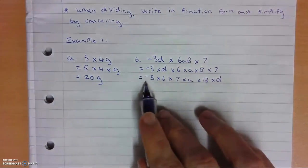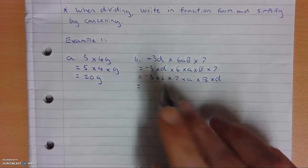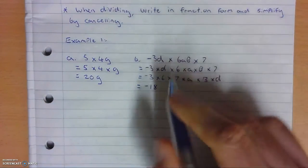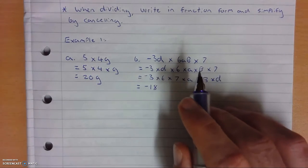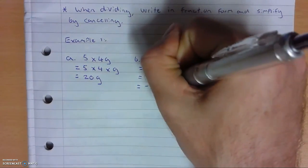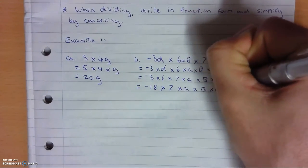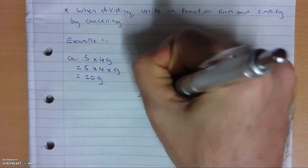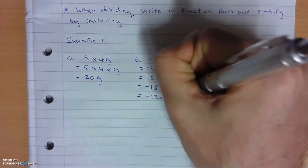Now all I have to do is multiply these all together. So negative 3 times 6 equals negative 18. Negative 18 times 7 will equal, I'll write that out again, times a, times b, times d, negative 18 times 7 will equal negative 126, and then negative 126 times our variables a, b, d.